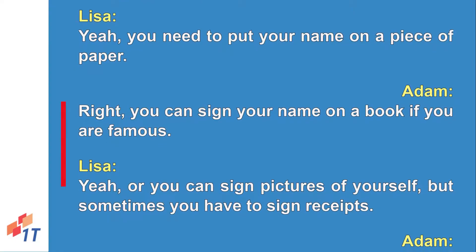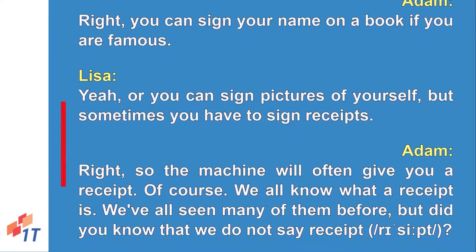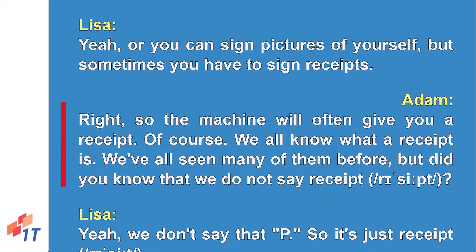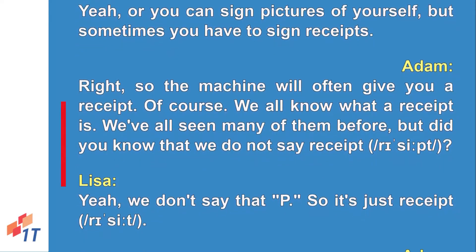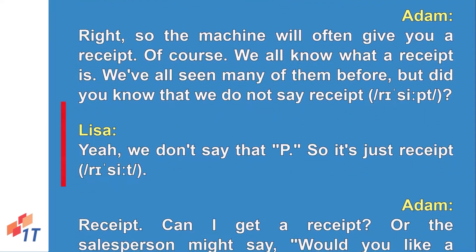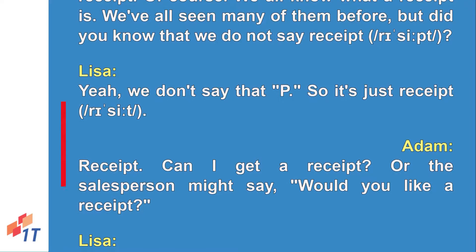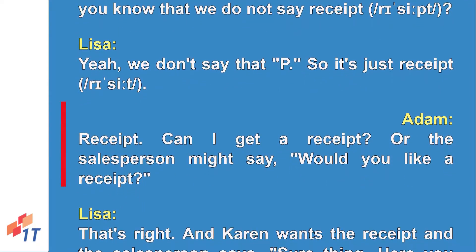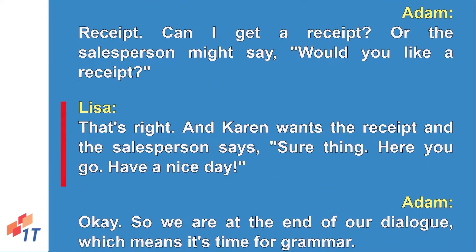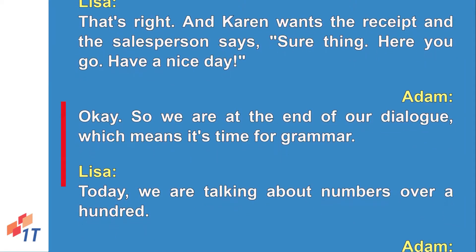You can sign your name in a book if you are famous, or you can sign pictures of yourself, but sometimes you have to sign receipts. The machine will often give you a receipt. We all know what a receipt is, but did you know we do not say the P? It's just 'receipt' — 'receipt.' Karen wants the receipt and the salesperson says 'Sure thing, here you go. Have a nice day.'